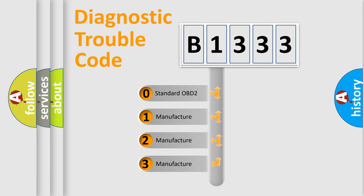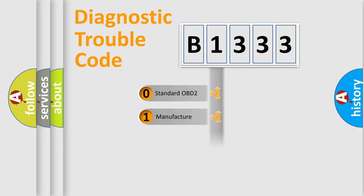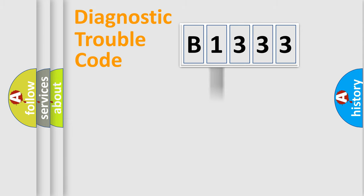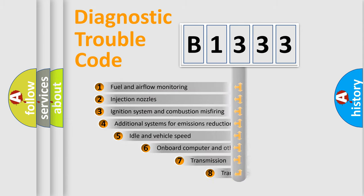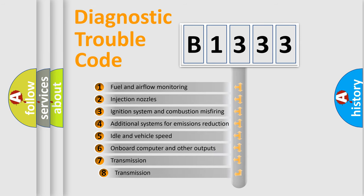If the second character is expressed as zero, it is a standardized error. In the case of numbers 1, 2, or 3, it is a more specific expression of a car-specific error.